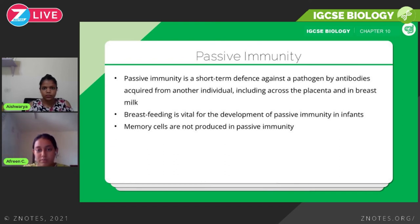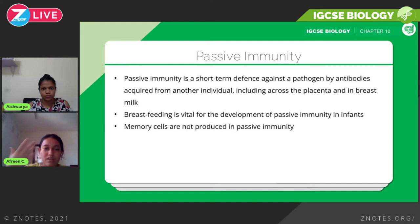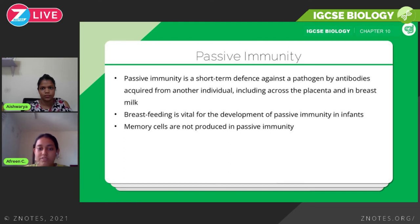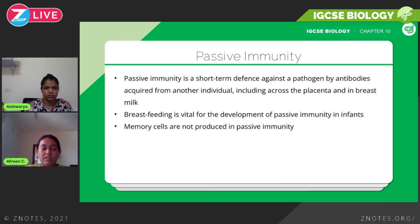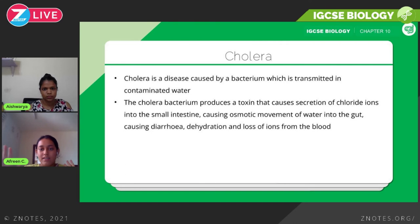Passive immunity is short-term, which is why babies regularly need breast milk. Another critical point is that memory cells are not produced in passive immunity — since memory cells provide long-term immunity and that's not occurring here, there are no memory cells formed. That concludes passive immunity.